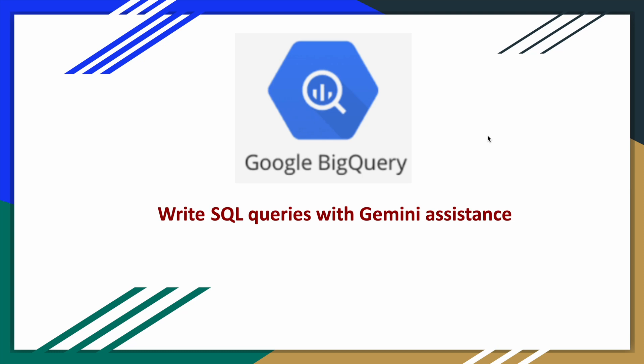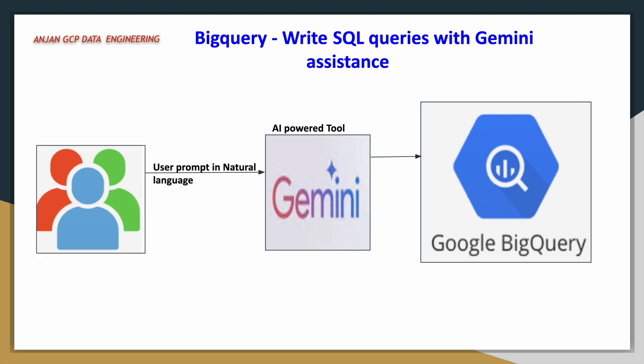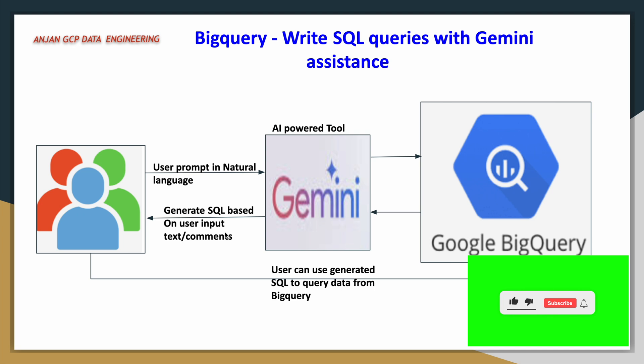Welcome to Anjanjcp Data Engineering. In this video, we are going to see how we can use Gemini assistance to generate BigQuery SQL by passing user inputs using natural language processing. Gemini is a tool where you can prompt your requirement using natural language — in our case, English — and Gemini will parse that input and generate SQL based on the user inputs. As a user, you can then enhance the query and execute it on the BigQuery editor.